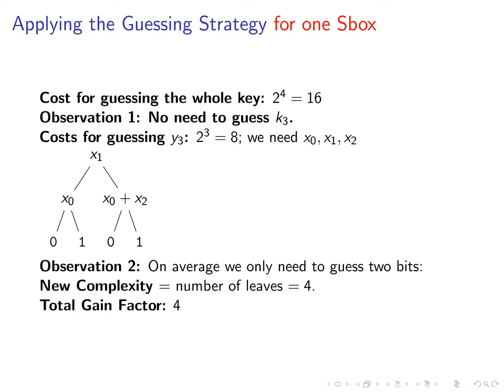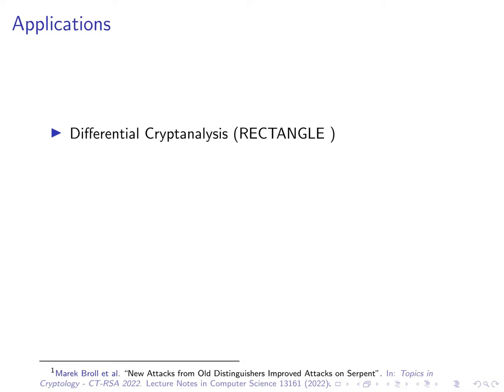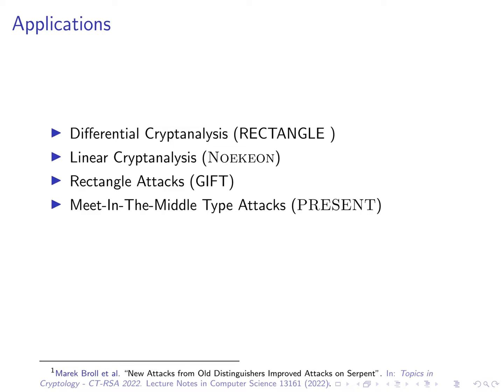Note that in practical attacks you usually can use this technique more than once. In our paper we apply our technique to several different types of attacks. For example to differential cryptanalysis against rectangle to linear cryptanalysis against noikion to rectangle attacks against gift and to meet in the middle attacks against present. Furthermore together with two other authors we've applied our method for differential linear attacks in this case against serpent. This is not part of the present paper but it's going to appear at CTRSA 2022.